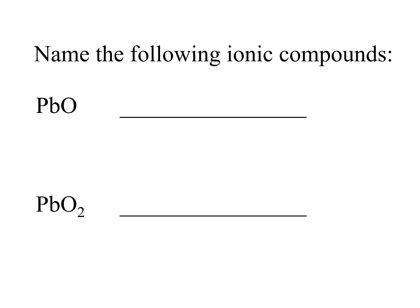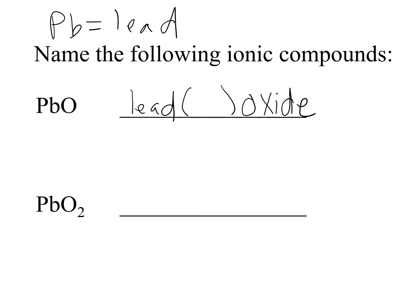Name the following ionic compounds: Pb stands for lead. Lead is below the metalloid line, so it needs parentheses with the Roman numeral. Oxygen is the anion and becomes oxide. Oxygen is in column 6 and forms a negative 2. We have a 1-to-1 ratio of lead to oxide, so the charges must balance — lead must be 2 positive. We put Roman numeral 2: lead(II) oxide.